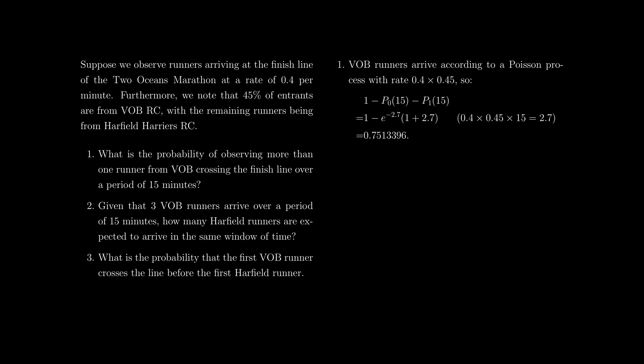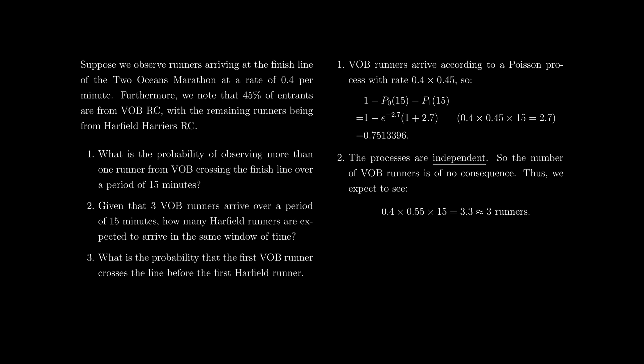Question two: given that three VOB runners arrive over a period of 15 minutes, how many Harfield runners are expected to arrive in the same window? The confusing part is that you have one overall process selecting runners — I've told you three have been selected from VOB. But from our theorem, those two processes are independent, so the number of VOB runners is of no consequence. We expect 0.4 times 0.55 times 15, which gives approximately three runners from Harfield.